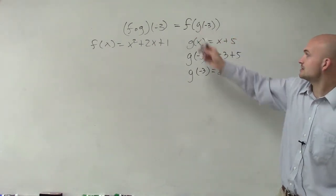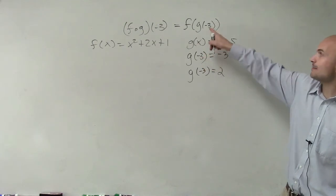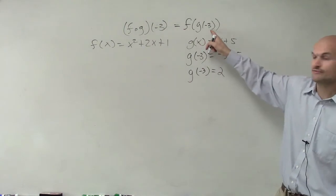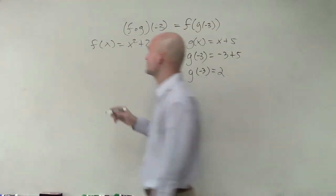Now that I know g of negative 3 equals positive 2, I'm going to plug g of negative 3 into my f of x function. Well, g of negative 3 equals 2, so therefore,